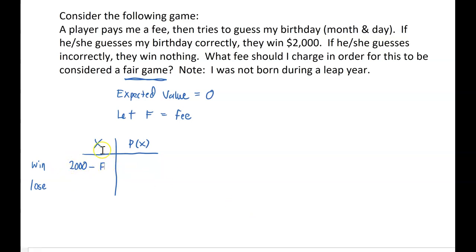Now, what does it look like if the player loses? Well, if they lose, they're just gonna come out at minus F dollars. Whatever fee they paid, they're just out that much money. So these are the two outcomes of the game. The person is either gonna win $2,000 minus the fee, or they're just gonna lose the fee.